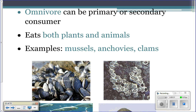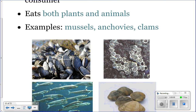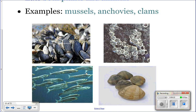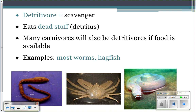Omnivores can be either primary or secondary consumers depending on what they are eating — they eat both plants and animals. If they're eating plants they're a primary consumer; if they're eating animals they're a secondary consumer. Examples include mussels, anchovies, and clams. At high tide, mussels open their shells and feed on both phytoplankton (plants) and zooplankton, making them primary or secondary consumers depending on what they consume.